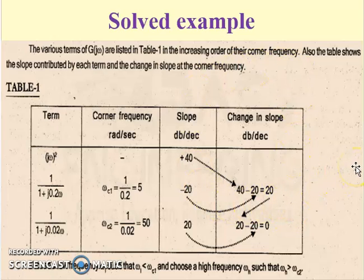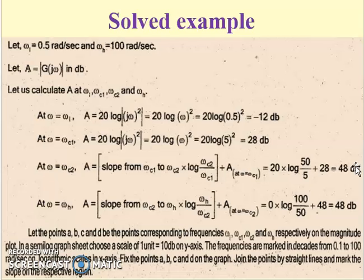After we form this table, we need to arbitrarily choose a lower frequency value and a higher frequency value. For this question, we have chosen omega_l as 0.5 radians per second and omega_h as 100 radians per second. The magnitude is denoted by A, where A equals the modulus of G(j omega) in dB. At omega equals omega_l, we substitute 20 log (j omega)² which is our first term without corner frequency. So 20 log(omega)², and we get the value as -12 dB.